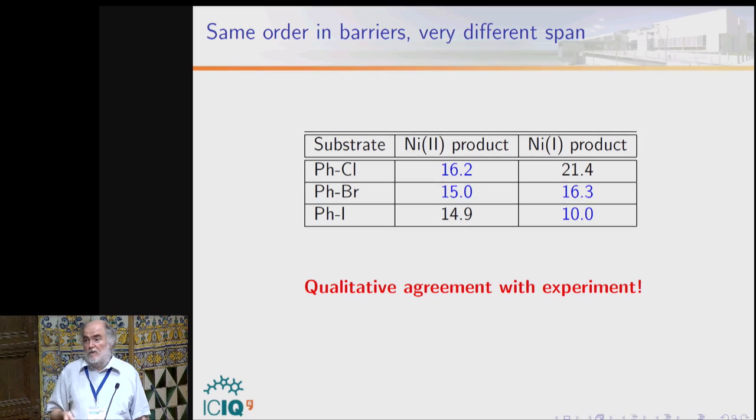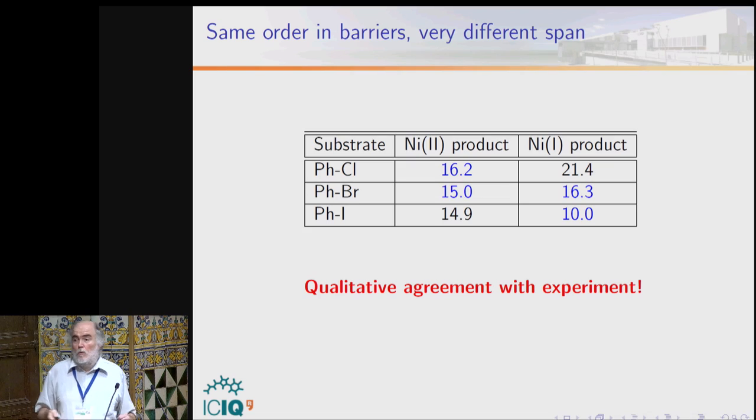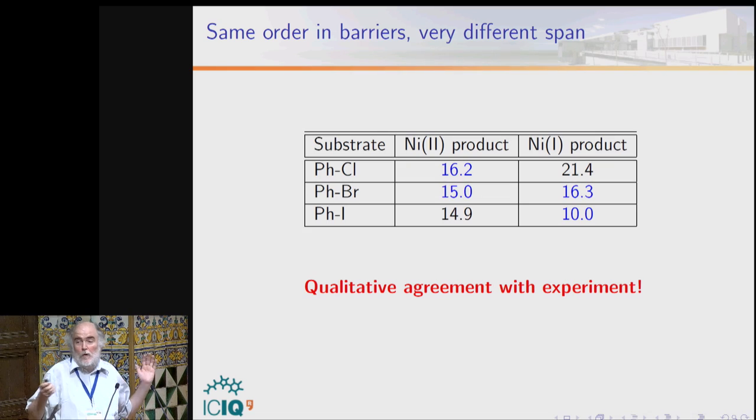Ni(II) is formed by initial carbon-to-nickel approach through an SN2-type transition state where the halogen leaves. Ni(I) is formed when the halobenzene approaches nickel through the halogen through an open-shell singlet transition state, with radical character forming on the phenyl ring and on the nickel, and the iodine transferred to nickel. For both pathways, barriers are higher for chlorine due to the stronger C–Cl bond. For Ni(II) the values are similar across halogens; for Ni(I) they are very diverse, making Ni(II) strongly favored for chlorine and Ni(I) strongly favored for iodine, with bromine intermediate. There is qualitative agreement with experiment.